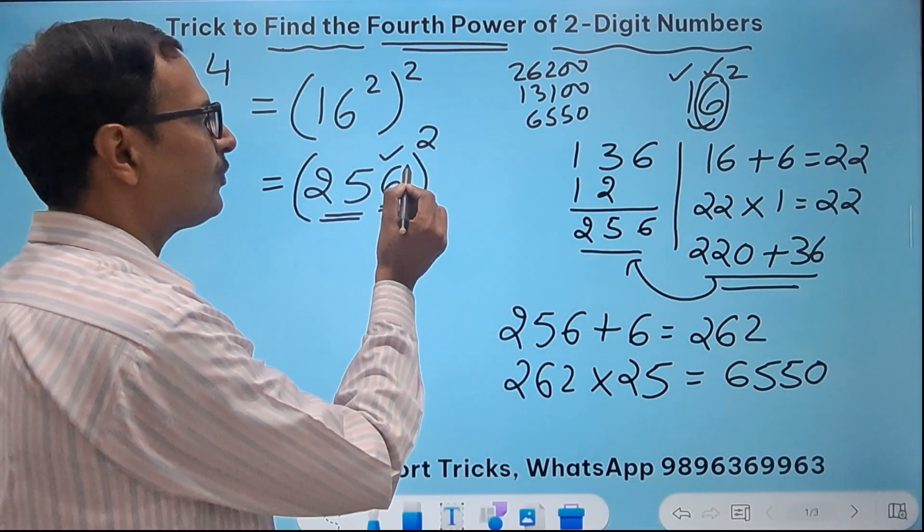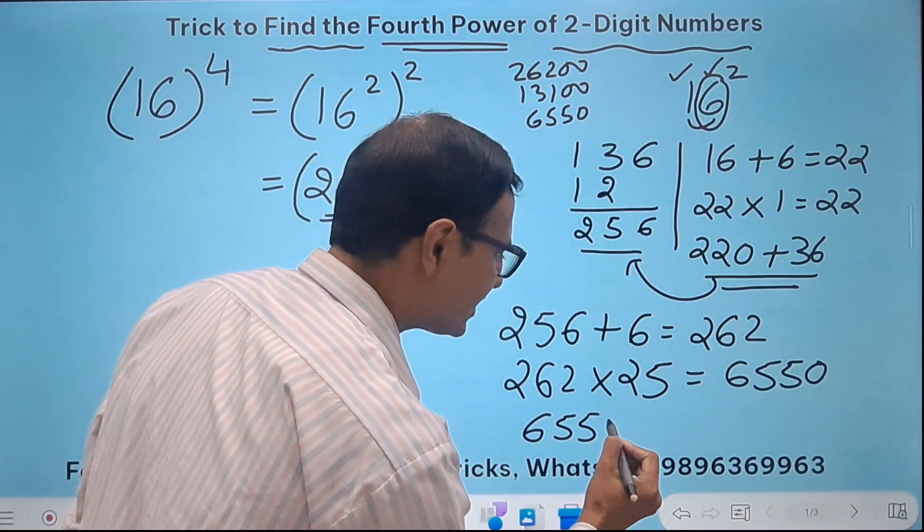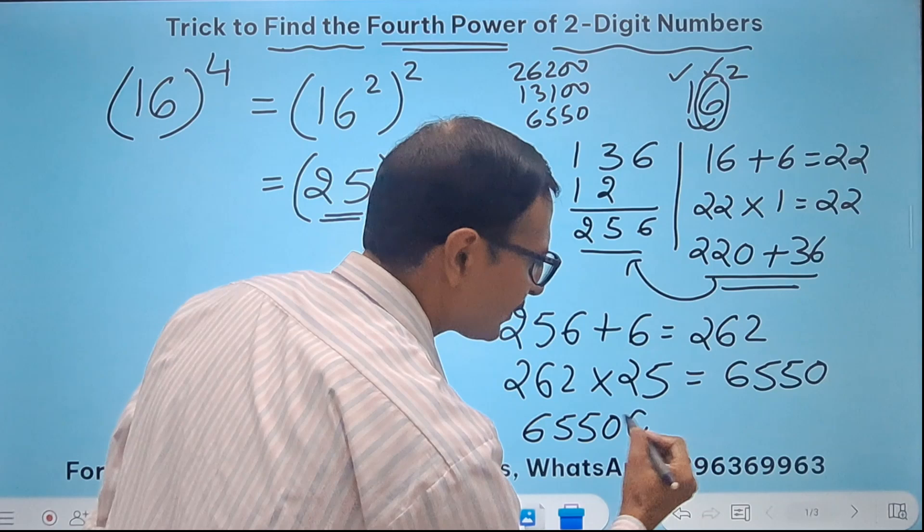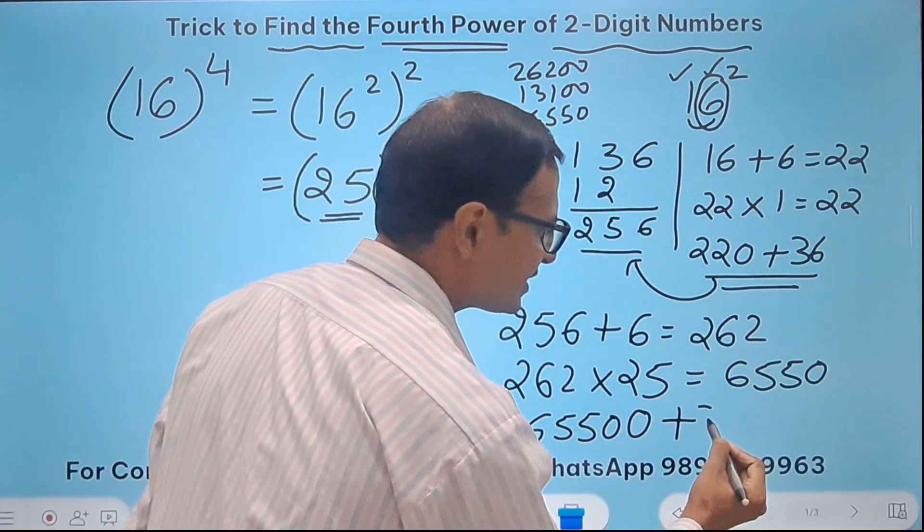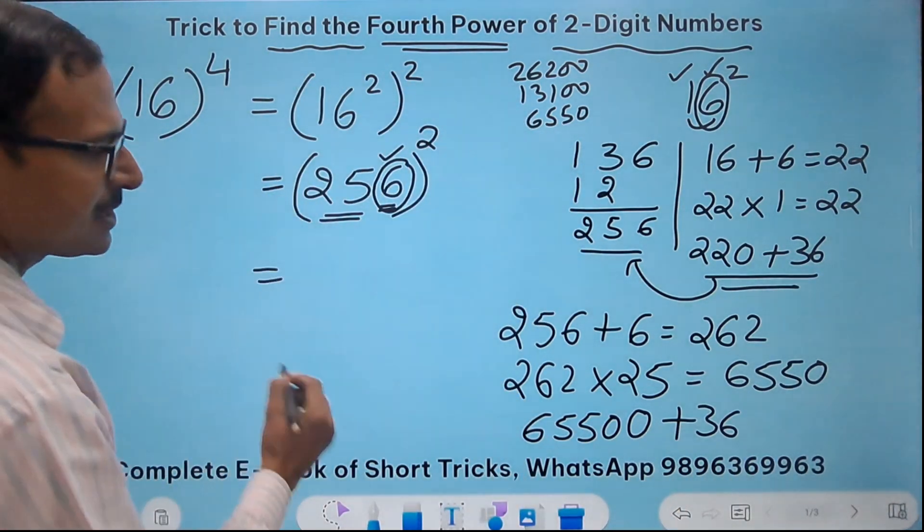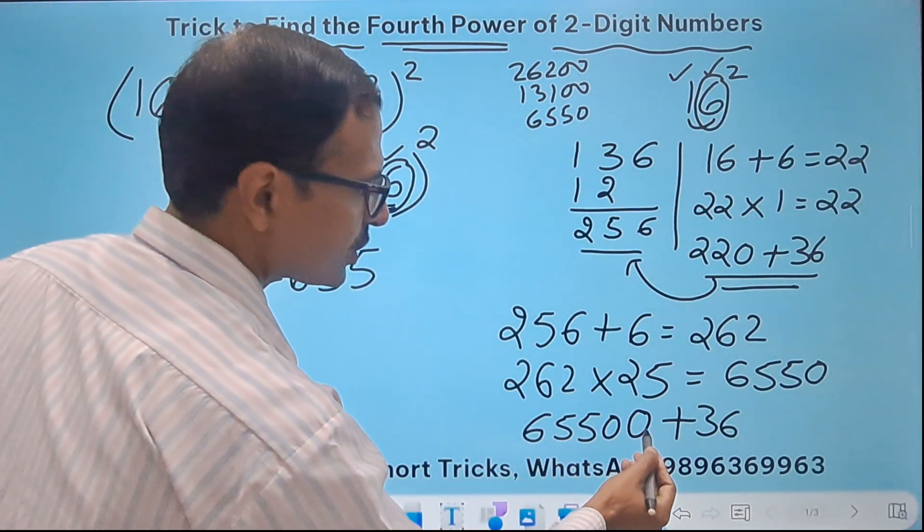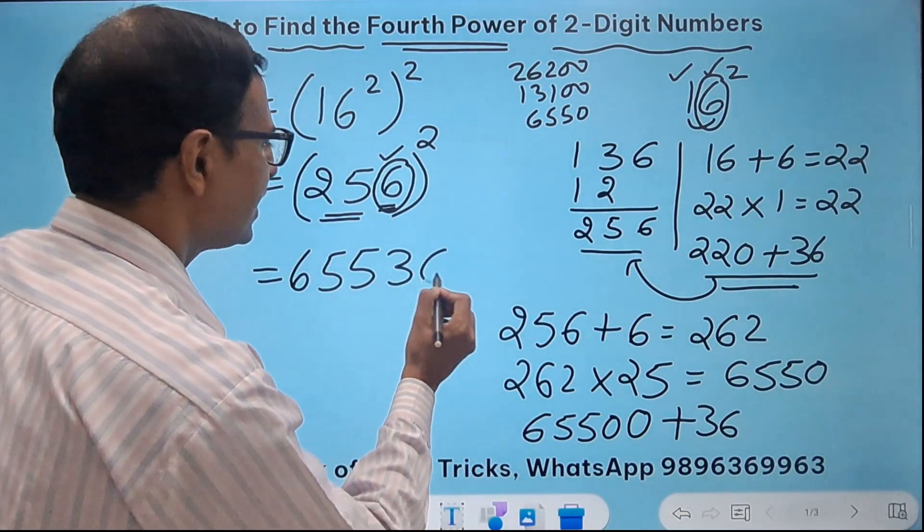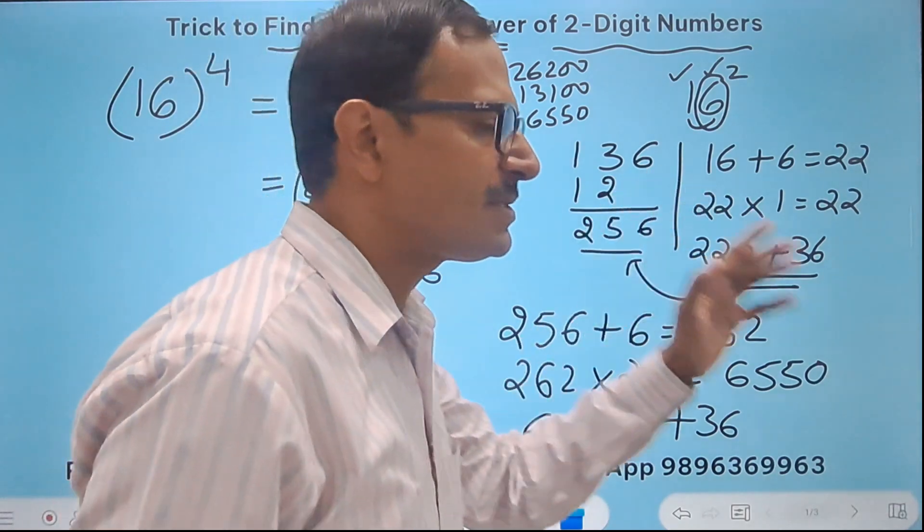Now since I took one digit here, so I will put 10 with this number and add 6 square, that means 36, to the result. What will you get here? This is 655 and 00 plus 36 is 36. And now pick up the calculator and check 16 raised to power 4. Is it 65536?